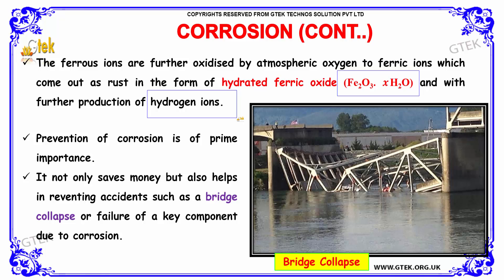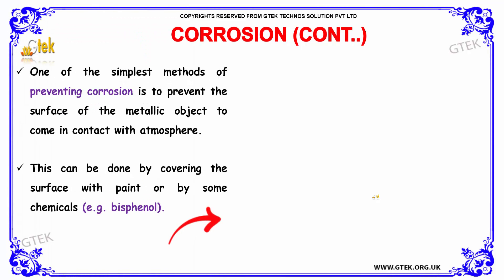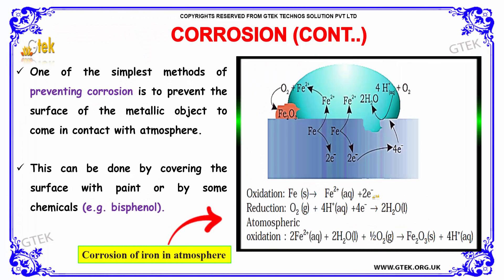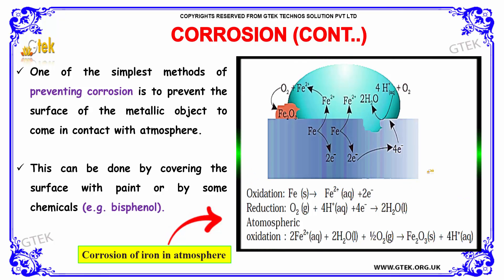The prevention of corrosion is of primary importance. It not only saves money but also helps in preventing accidents such as bridge collapse or failure of a key component due to corrosion. One of the simplest methods is to prevent the surface of the metallic object from coming into contact with the atmosphere, which can be done by covering the surface with paint or by some other chemicals such as bisphenol.